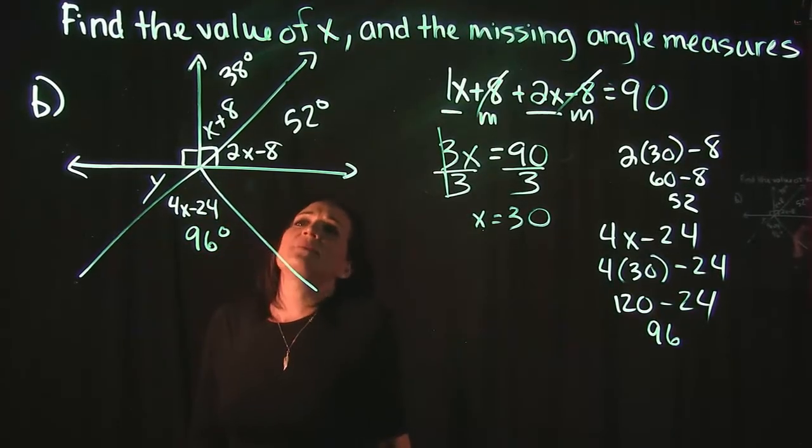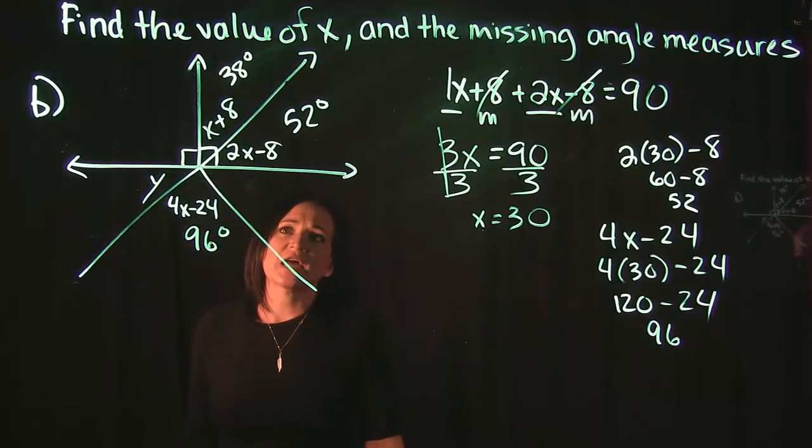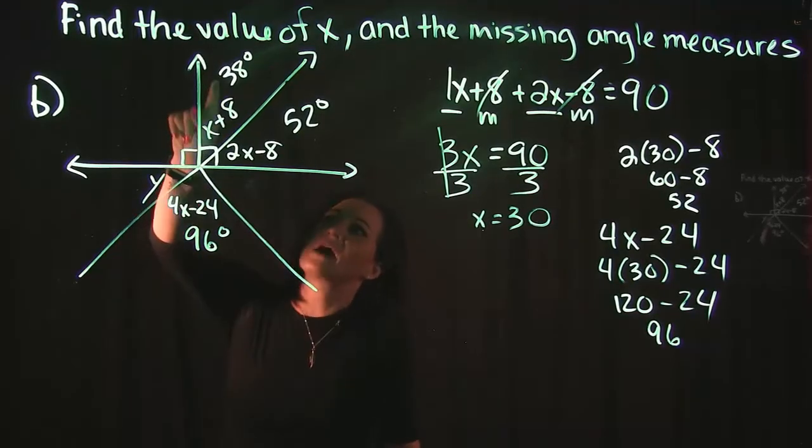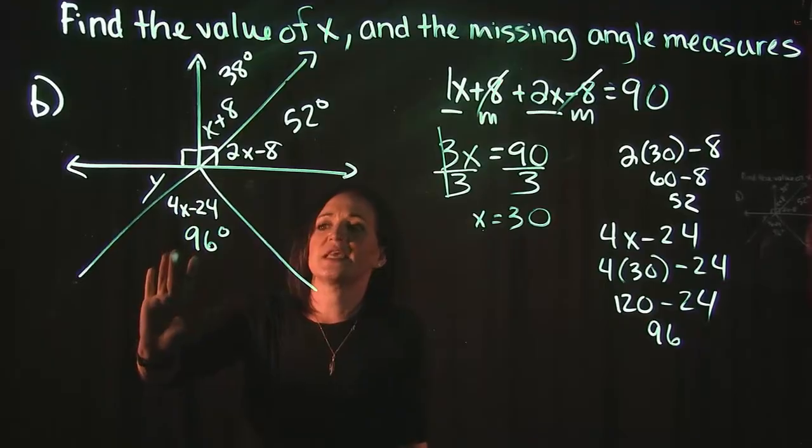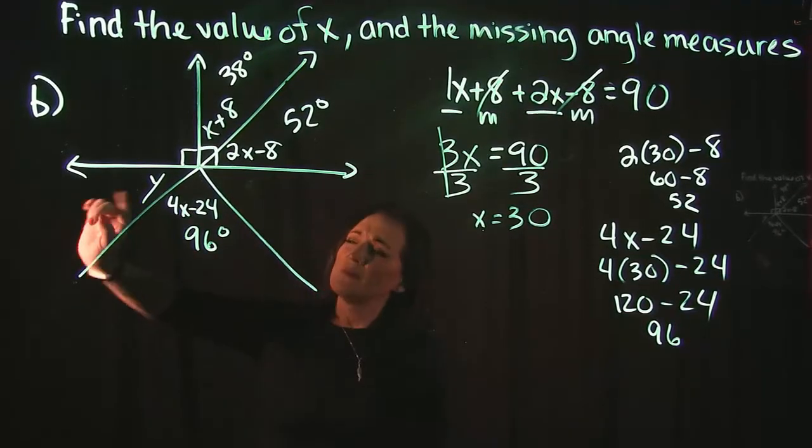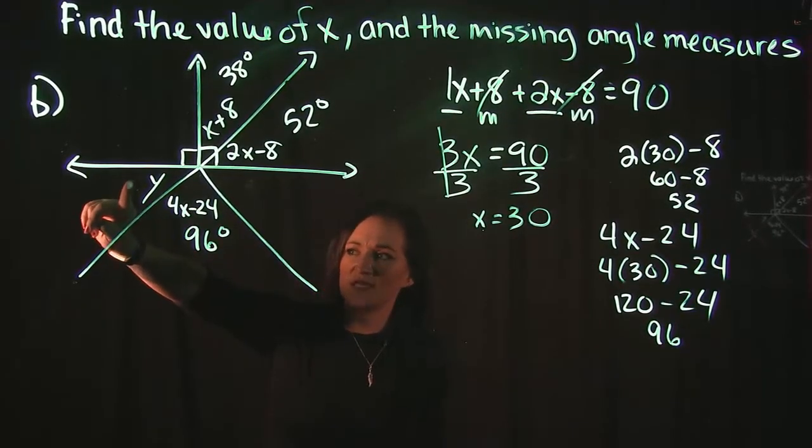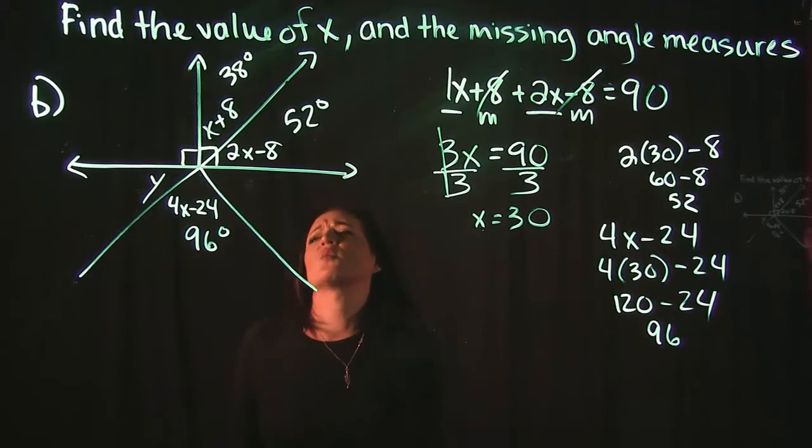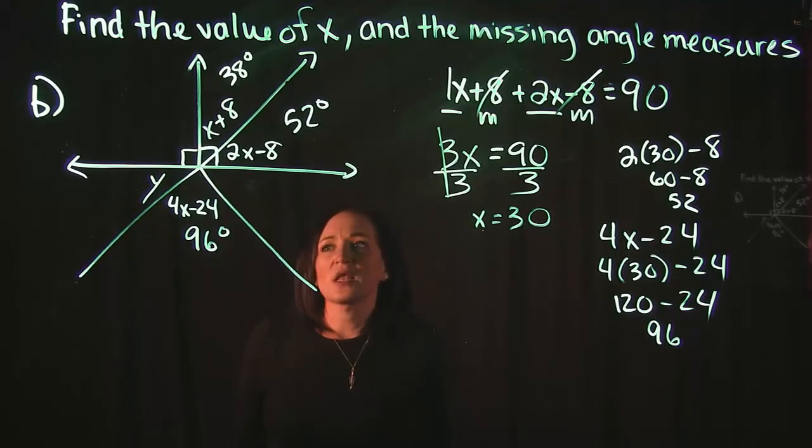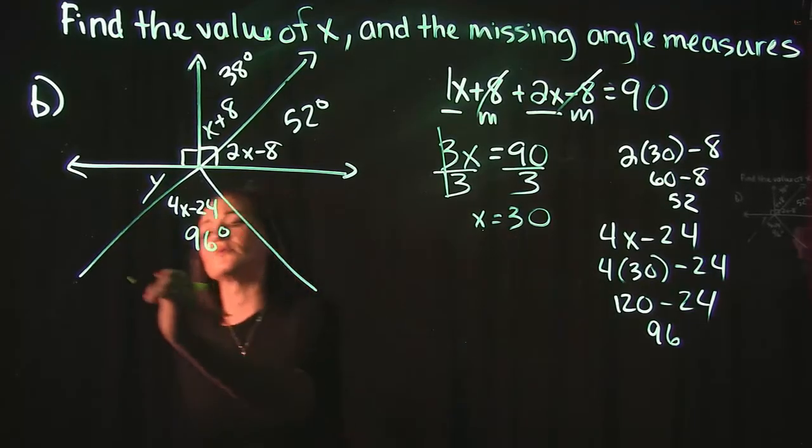So then, that means we almost have the entire thing figured out. We found all of the missing angles here that have x's labeled with them. But I do see that we have this angle over here labeled with a y. So we need to figure out what that y is equal to. So let's see if we can figure out a way to do that. So we don't have any other y's in the problem.